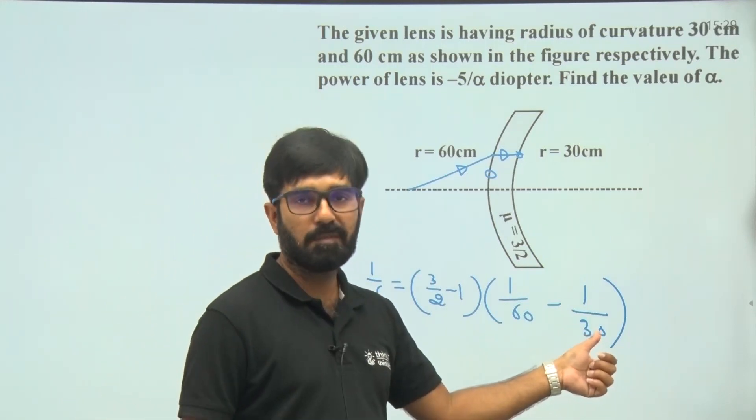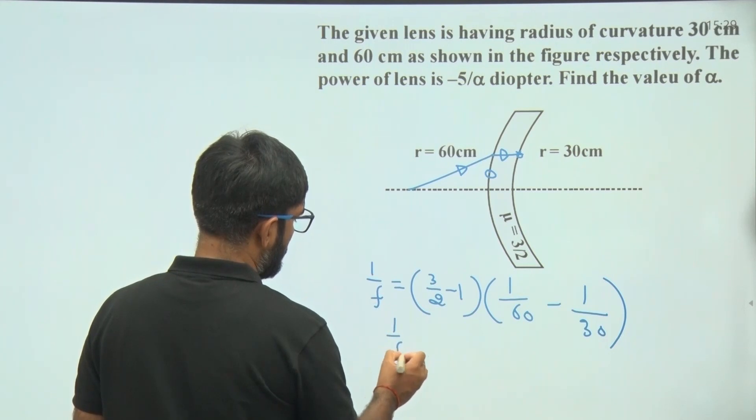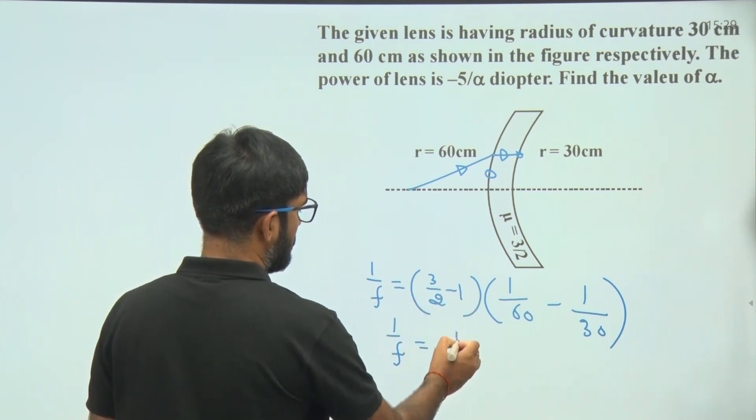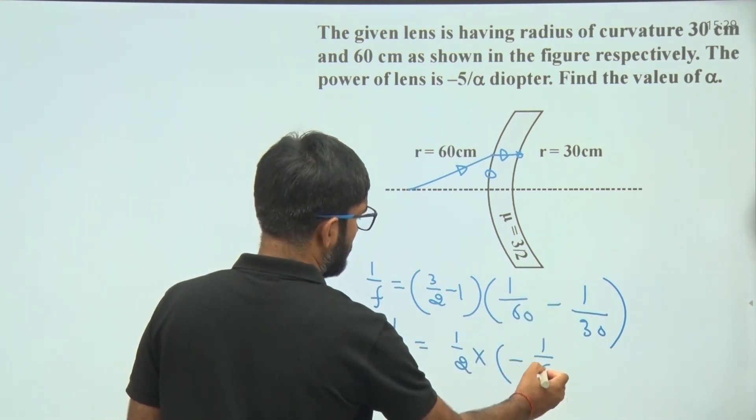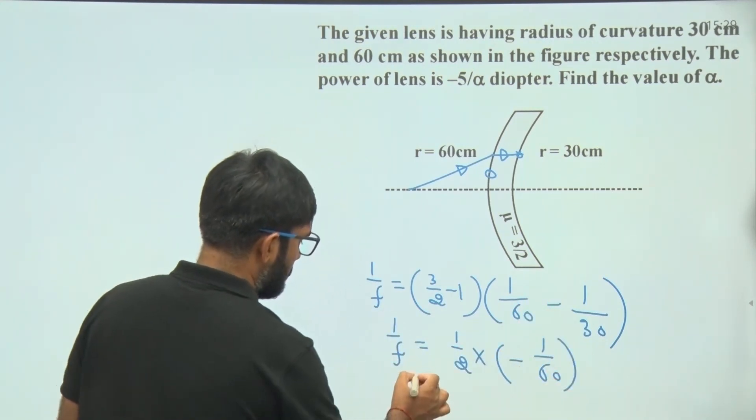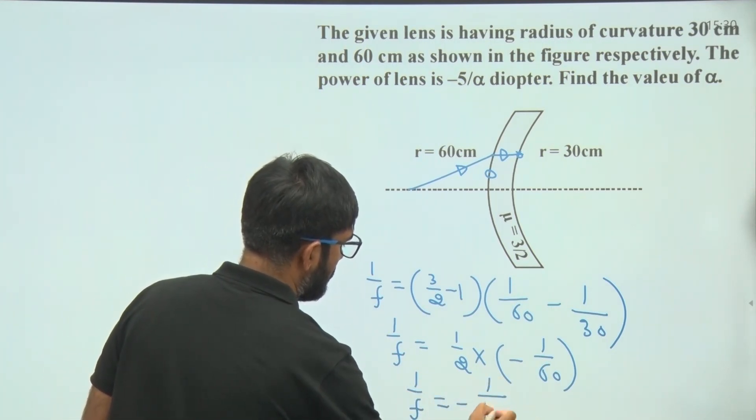On solving this, we get 1 by f equal to 3 by 2 minus 1, which is 1 by 2, into 1 by 60 minus 1 by 30. Minus 1 by 60, this will be 1 by f equal to minus 1 upon 120.